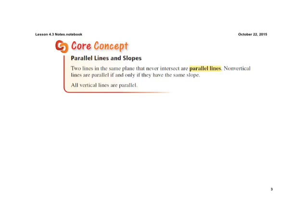Okay, our core concept: parallel lines, this is the definition we just talked about. They have to have the same slope. And also all vertical lines are parallel. Up and down, vertical lines, they're all parallel. Parallel lines must have the same slope.